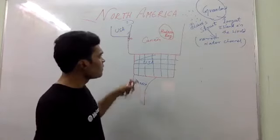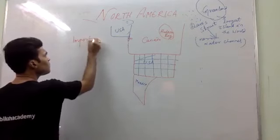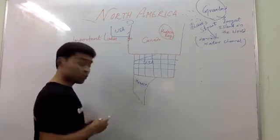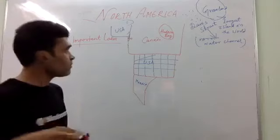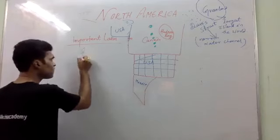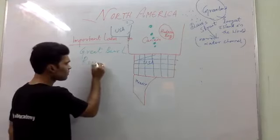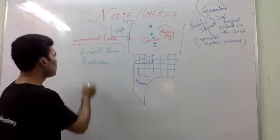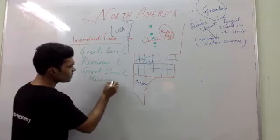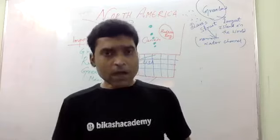Now we will discuss the various lakes. You can see that in Canada, most of the lakes run north to south. Here you will find various lakes. The important ones are: Great Bear Lake, Reindeer Lake, and Great Slave Lake. There are so many lakes in this area.